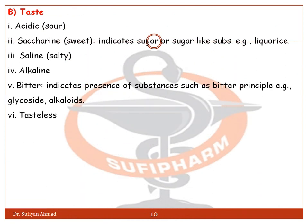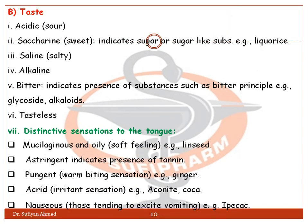Taste may be: acidic meaning sour; saccharine meaning sweet, indicating sugar or sugar-like substances such as licorice; saline meaning salty; alkaline; bitter, indicating the presence of substances such as bitter principles — for example glycosides and alkaloids; tasteless; and distinctive sensation to the tongue such as mucilaginous and oily soft feeling, for example linseed.